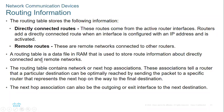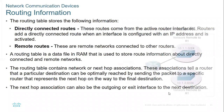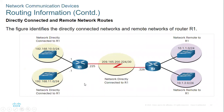The routing table is a data file stored in RAM. Since RAM is volatile, when you switch off the router, anything in the routing table is also lost. The routing table also contains network-to-next-hop associations as well as the outgoing or exit interface to the next destination.